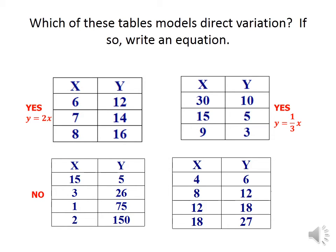For the fourth table: 6 over 4 equals 3 over 2; 12 over 8 equals 3 over 2; 18 over 16 — wait, 27 over 18 also equals 3 over 2. So I can say that y equals 3 over 2 times x, or 1.5x.